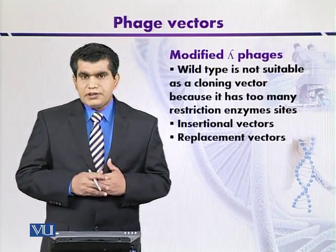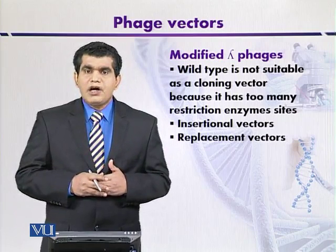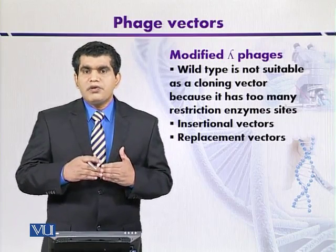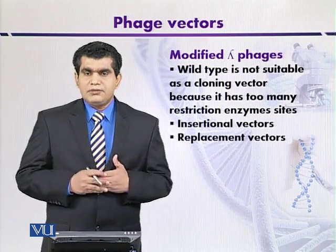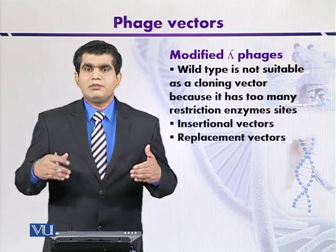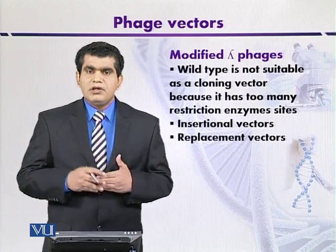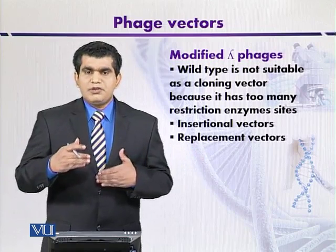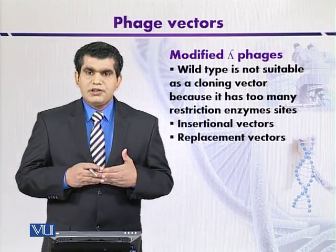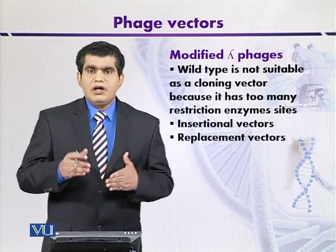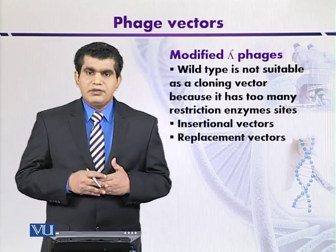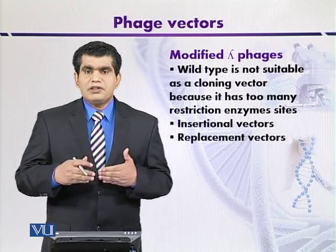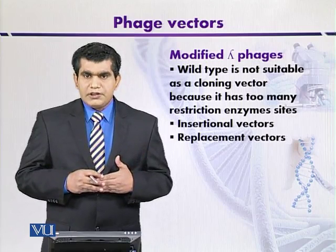The modified lambda phages are produced by removing multiple cloning sites by mutational approaches. This may include substitution of bases, or addition or deletion of certain bases, so that the modified phage may contain only a few cloning sites.